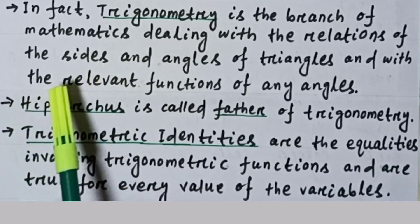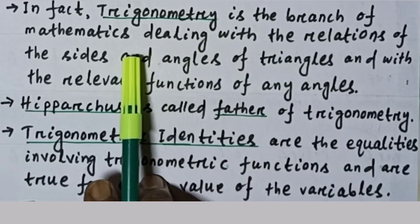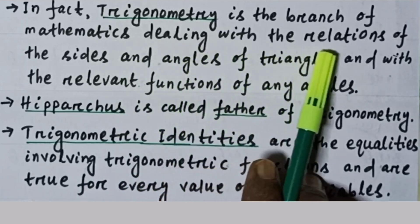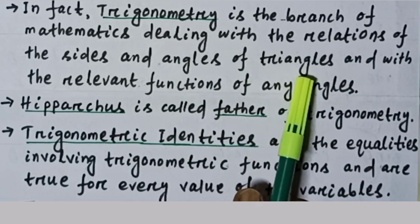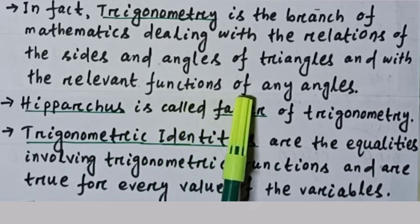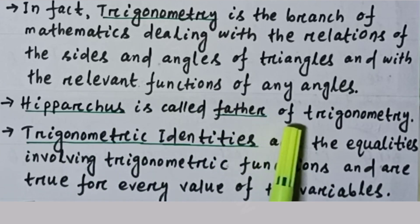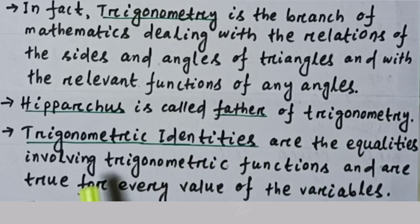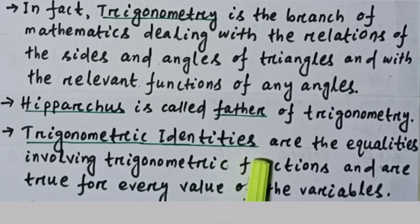The definition: trigonometry is the branch of mathematics dealing with the relations of the sides and angles of triangles and with the relevant functions of any angles. Hipparchus is called the father of trigonometry.